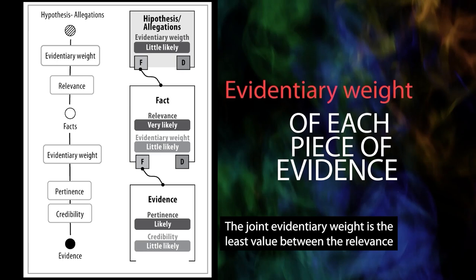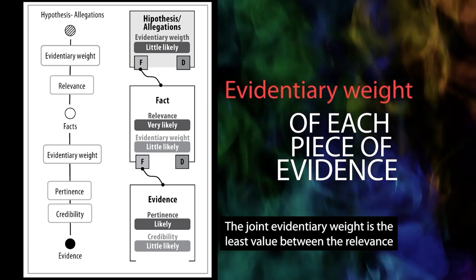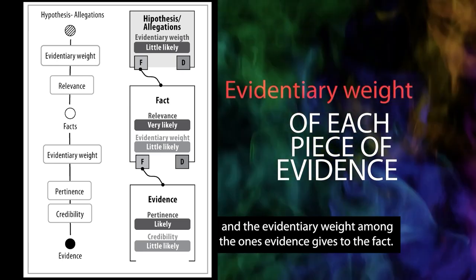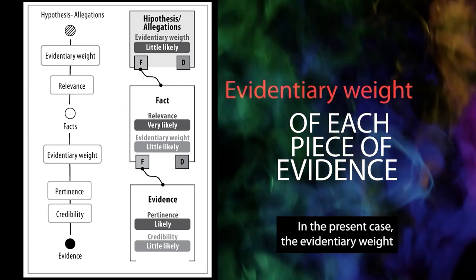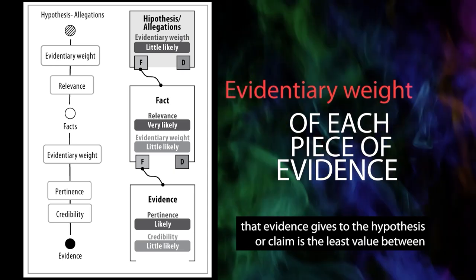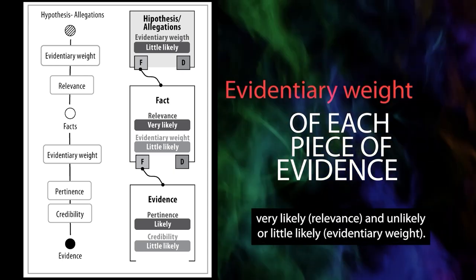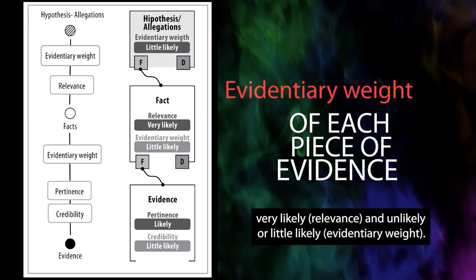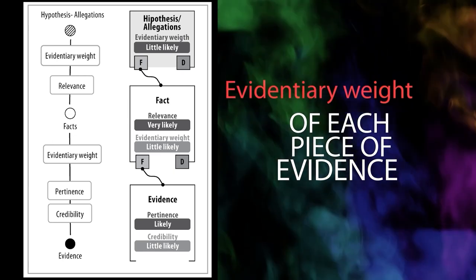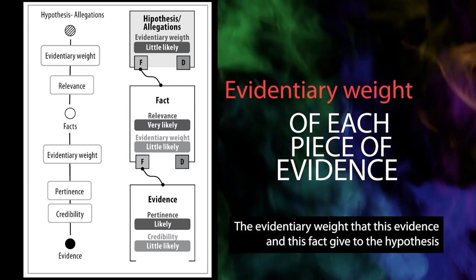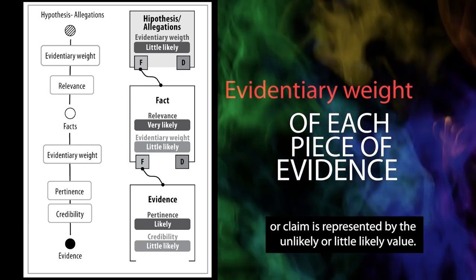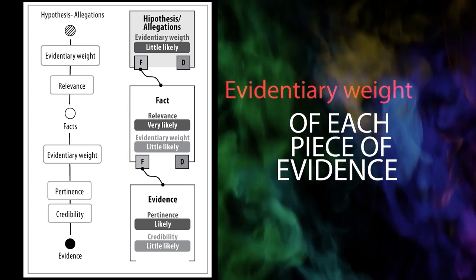The joint evidentiary weight is the least value between the relevance and the evidentiary weight among the ones evidence gives to the fact. In the present case, the evidentiary weight that evidence gives to the hypothesis or claim is the least value between very likely (relevance) and unlikely or little likely (evidentiary weight). The evidentiary weight that this evidence and this fact give to the hypothesis or claim is represented by the unlikely or little likely value.